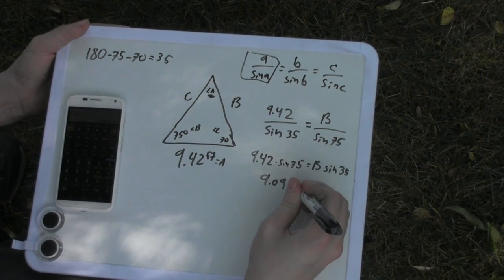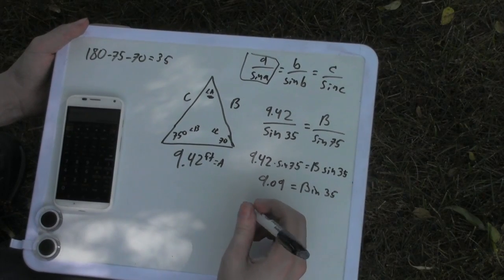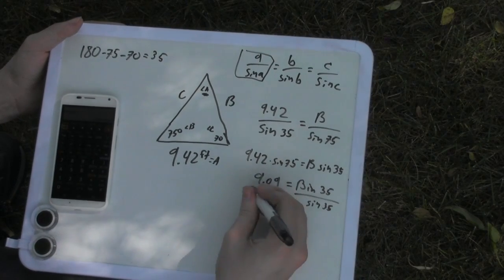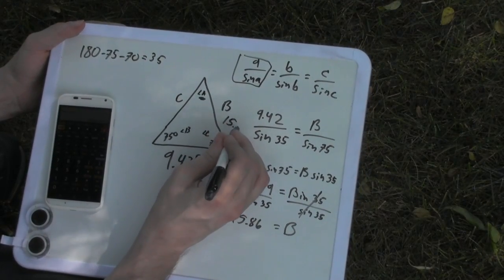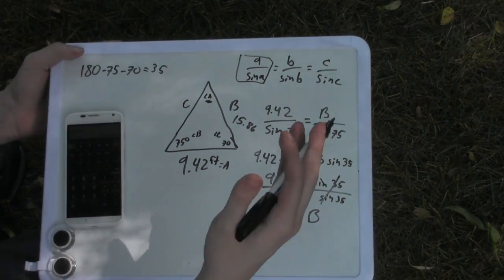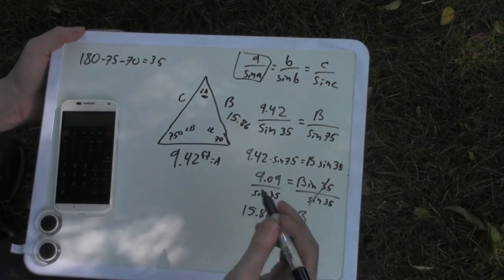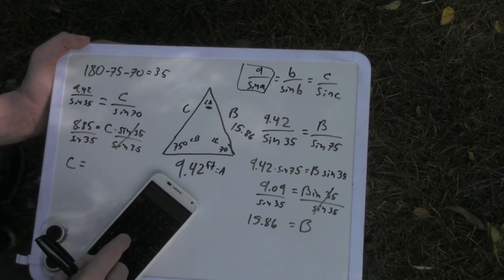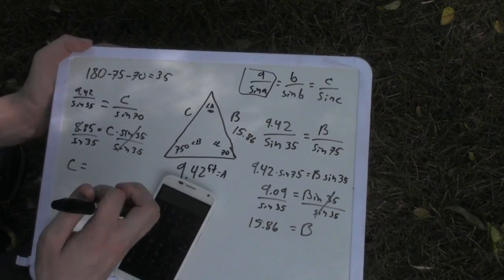Which is equal to B of sine 35. Then we can divide each side by sine 35. 15.86 equals B. So B is 15.86. And when we do the measurements we should get 15.86 for B. And for C we do roughly the same thing. So then C is 15.43.